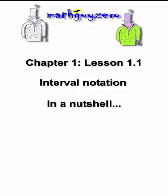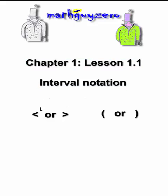So in a review, in a nutshell here, if you're dealing with a less than or greater than symbol only, you're going to use parentheses. If it's a less than or equal to or greater than or equal to, you're going to use the brackets.